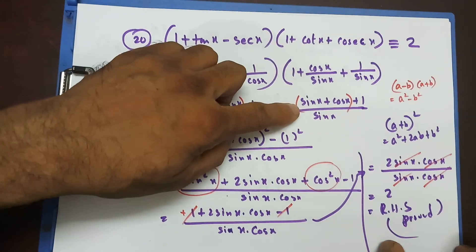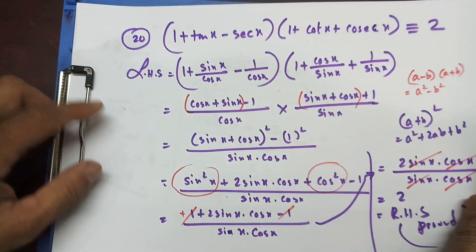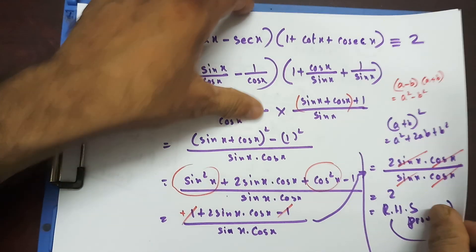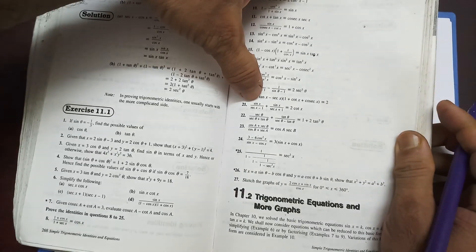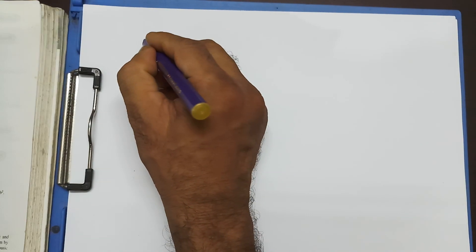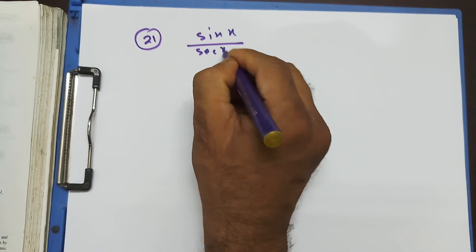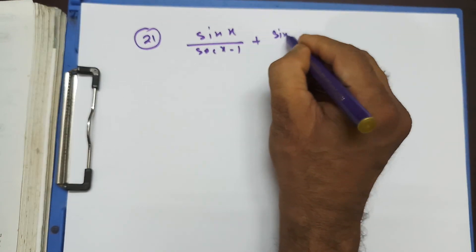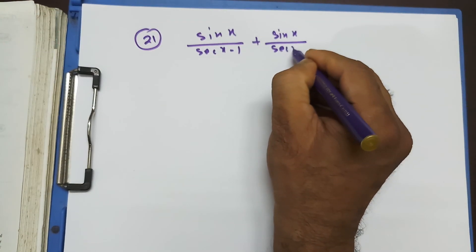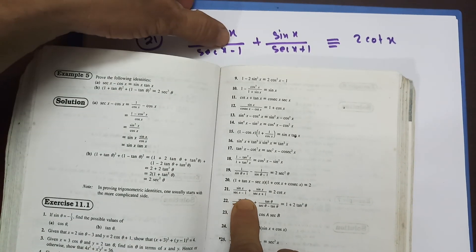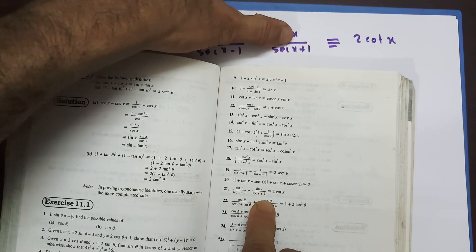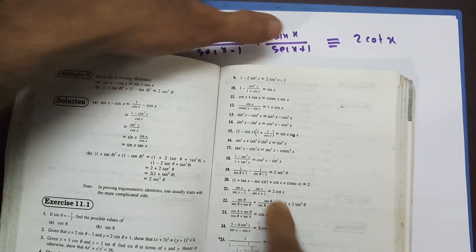It looks really nasty, but if you think for a second it's not that tough at all. Now we're going to do question 21. Question 21: sinx/(secx - 1) + sinx/(secx + 1) is identical to 2cotx.